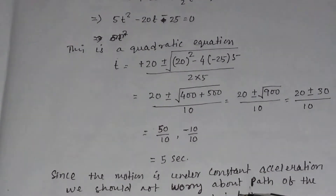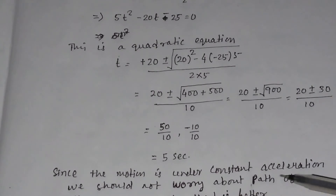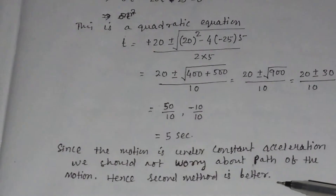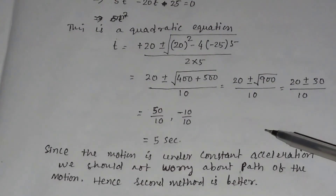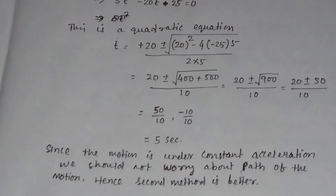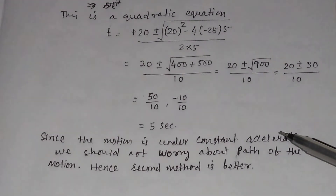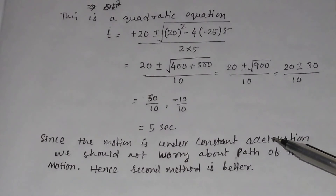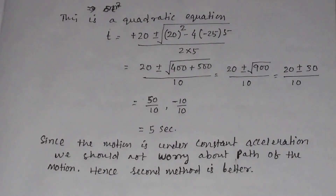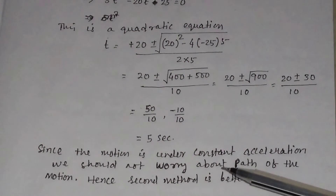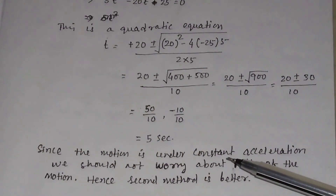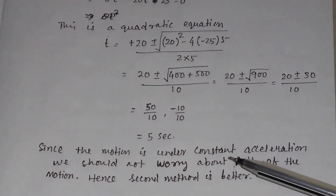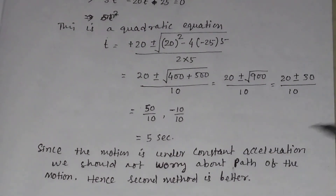Since the motion is under constant acceleration, we should not worry about the path of the motion. Hence, the second method is a better method to calculate the total time. In this video, we have discussed one application of the equation of motion — that is, motion in a vertical direction. In the next video, we will discuss another application of the equation of motion, that is free fall. Thank you.